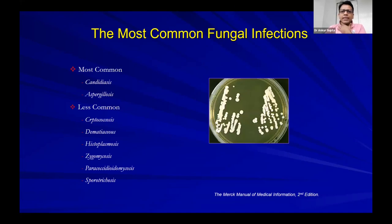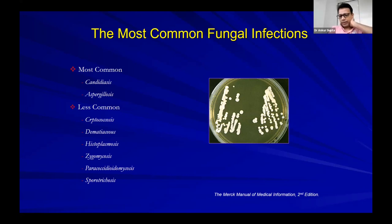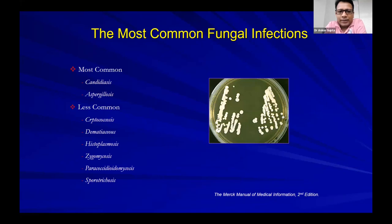The most common fungal infections are Candida and Aspergillus — one is a yeast, the other is a mold. Other less common infections include Cryptococcus, histoplasmosis, zygomycetes, and sporotrichosis. Among these, Cryptococcus is also a yeast, while one of the most common molds other than Aspergillus is zygomycetes, also called mucormycosis.